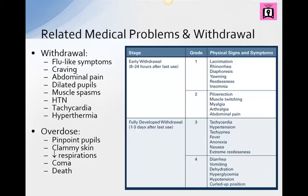Opioid overdose is a medical emergency. Monitor ABCs, vitals, and respiratory status. As a nurse, you need to know that there is an antidote — it's called Narcan, and it is the reversal agent for opiates.